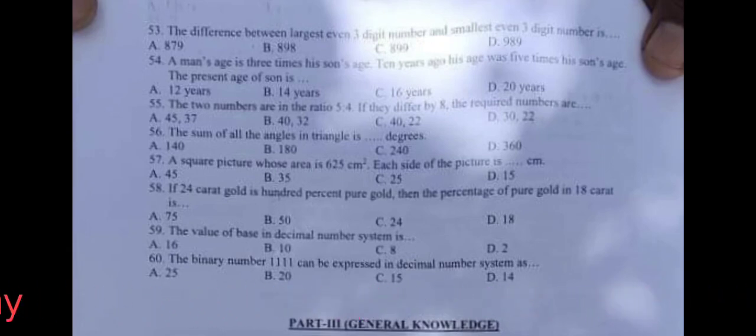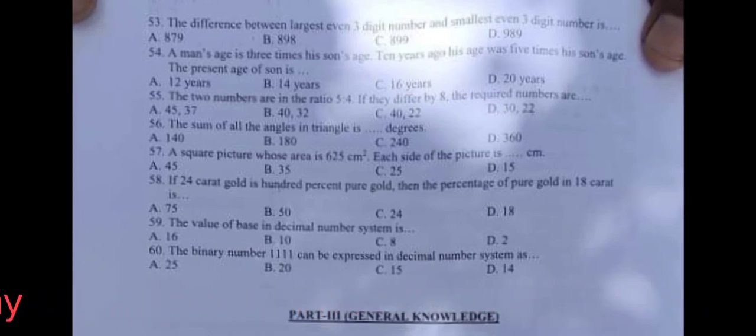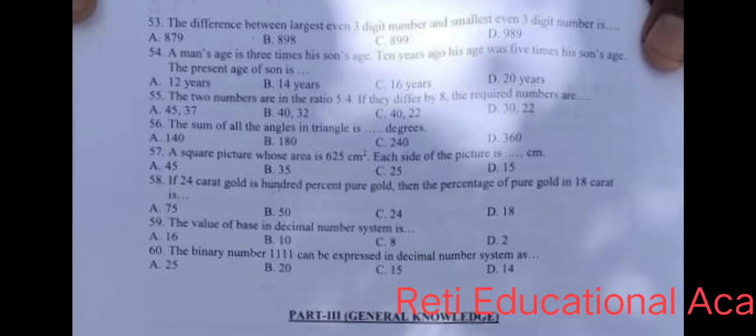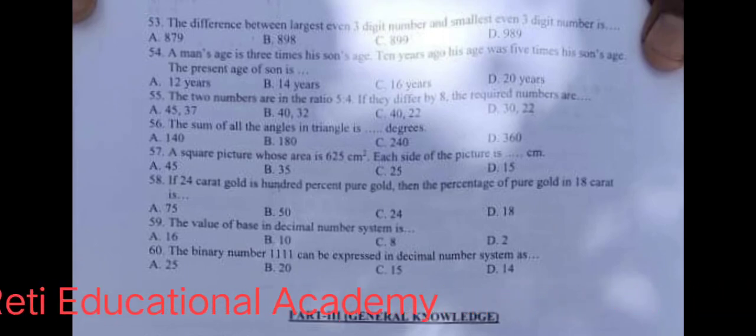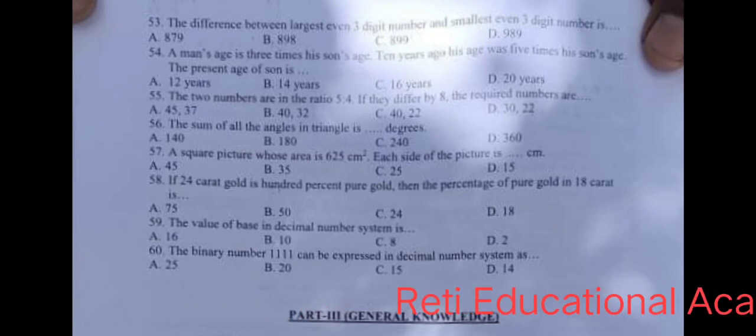Question number 54: A man's age is three times his son's age. 10 years ago his age was five times his son's age. The present age of son is, and the correct answer is D, 20 years.